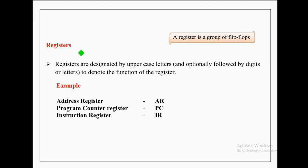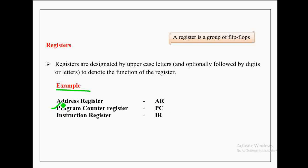Registers are usually represented by uppercase letters, optionally followed by digits or letters. For example, an address register is represented as AR, a program counter register is represented as PC, and an instruction register is represented as IR.